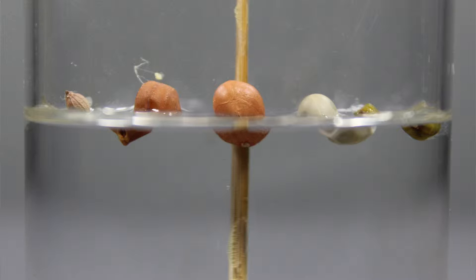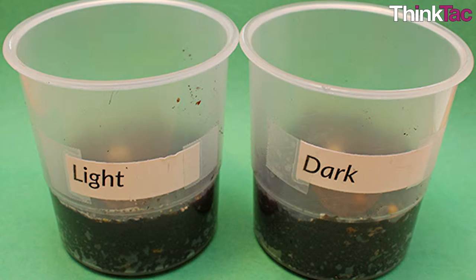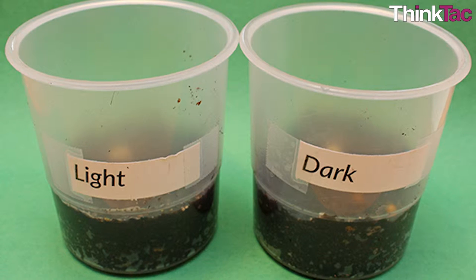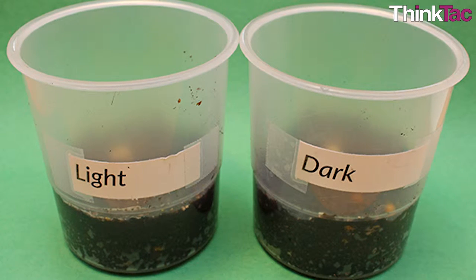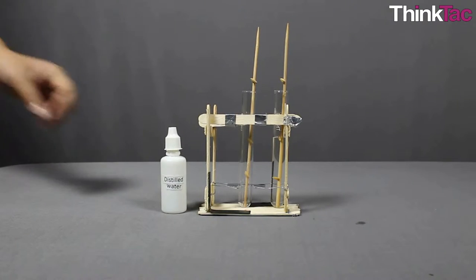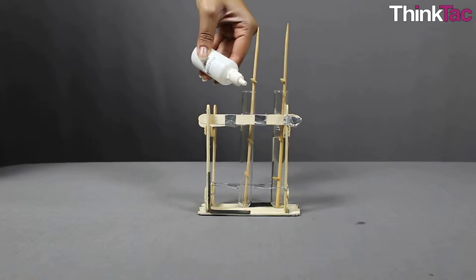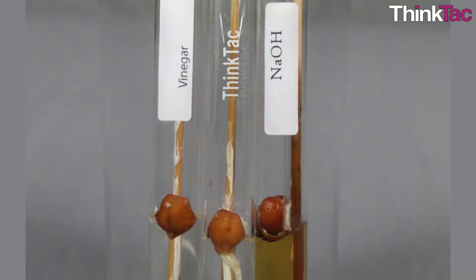Let us now think of some other conditions that could affect germination. This activity was performed at room temperature. If you repeat this activity at a cooler temperature, for example by keeping the setup inside a refrigerator, you would be able to see how temperature affects germination. Similarly, keeping the setup in a dark cabinet would show you if light is required for germination. Finally, you could compare the rate of germination of different seeds to see which seeds germinate faster. You could also try this in distilled water or try growing seeds in a totally different liquid like alcohol.